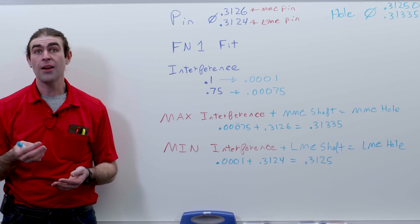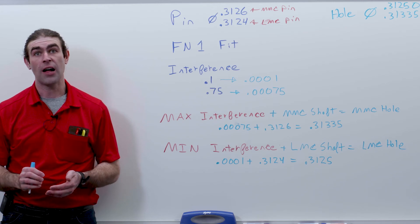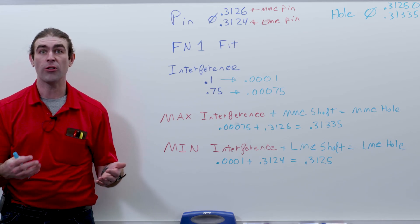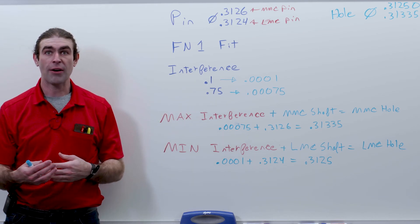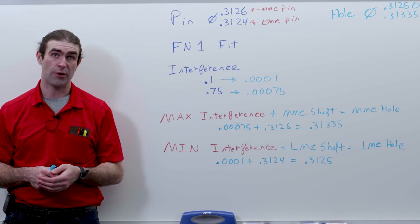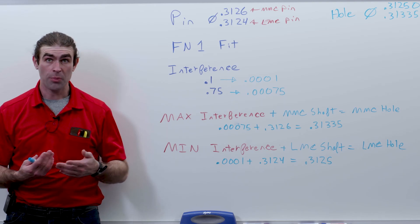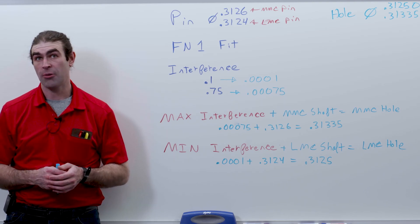So that's all there is to it, calculating a fit when you have the dimension and the tolerance for one of the sides. All you need is this information right here, either the clearance values or the interference values. So if you enjoyed the video, please like, subscribe, leave a comment down below.